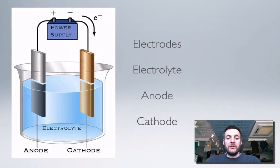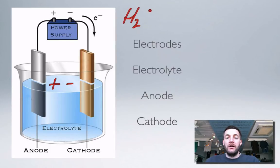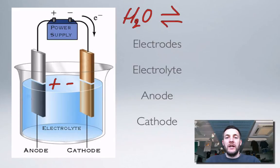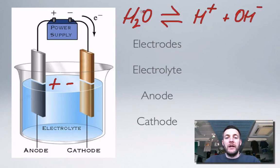Whereas before we just melted an ionic solid and ended up with positive and negative ions floating around, this time we're dissolving our ionic solid in water to make it conduct. Remember that water is a weak electrolyte — it breaks up into ions but its ionization isn't complete. Not many molecules do this, but as soon as you add water you are introducing hydrogen ions and hydroxide ions to your electrolyte.